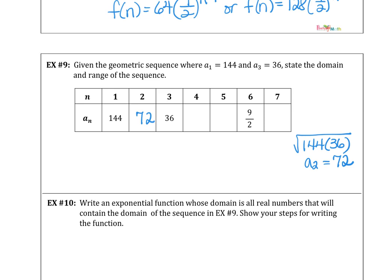So 144, 72, divided in half is 36. Cut that in half is 18. 9, 9 over 2, and then 9 over 4. So again, our rate in this one is also 1 half.